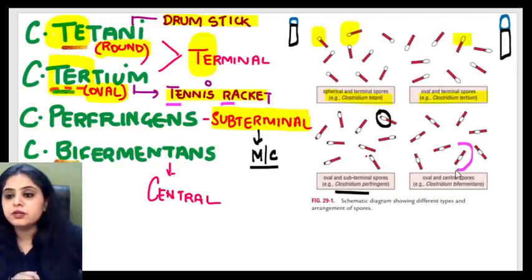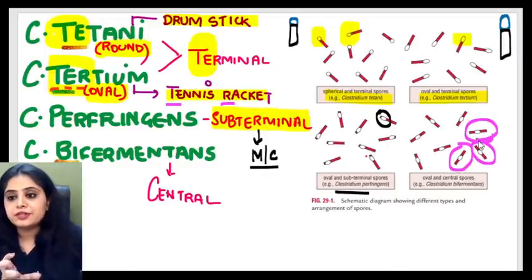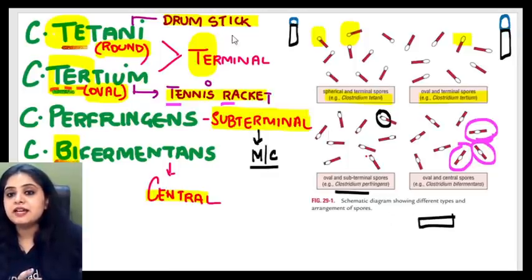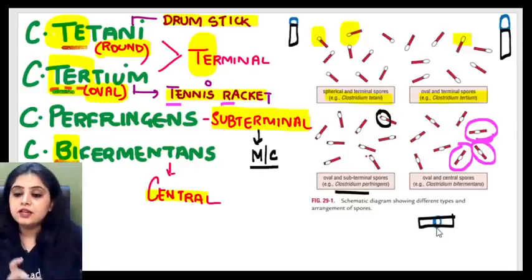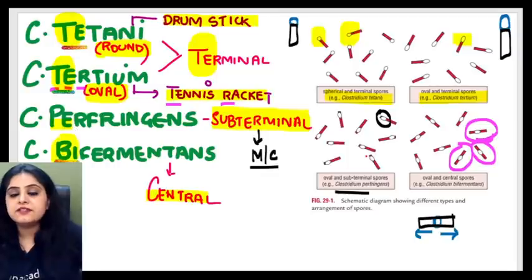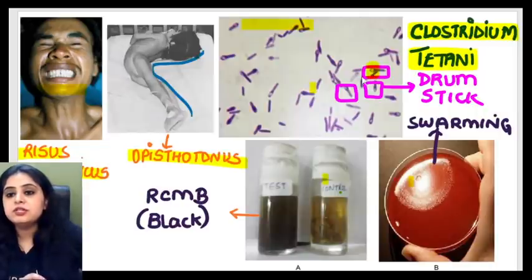The fourth organism is Clostridium bifermentans, which shows a central spore — right in the center. The mnemonic: 'bi' sounds like it's dividing something into two parts, so the spore is in the center, dividing it into two. Quick recap: tertium and tetani have terminal spores; perfringens — the most common — has subterminal spores; and bifermentans has central spores. Coming back to our image, round terminal spores confirm Clostridium tetani — drumstick appearance.